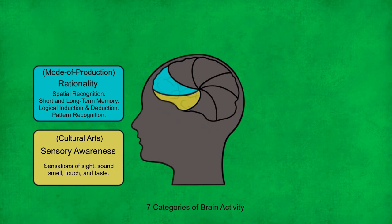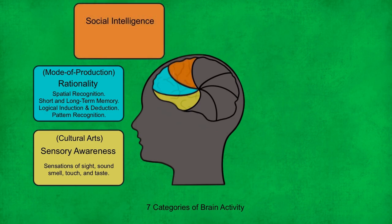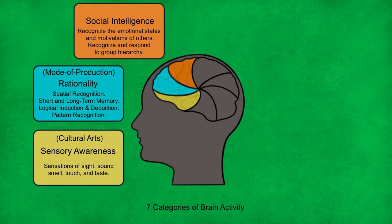For humans to survive, they also need the brain areas associated with social intelligence in order to function and reproduce effectively in social groups. This collection of cognitive processes includes the ability to recognise the emotional states and motivations of others, and to recognise and respond to group hierarchy through an ability to interact with specific individuals in an appropriate way. Social intelligence initially manifests as gossip, but eventually takes the form of all types of human storytelling — from individual performance storytelling to theatre, puppetry, film and television.